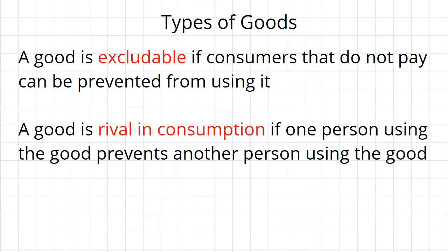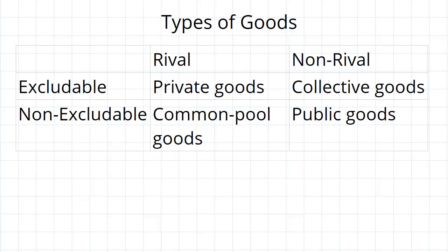These two attributes allow us to have four different types of good. The first type of good, which is excludable and rival in consumption, is private goods. Throughout these videos we've mostly been dealing with private goods — this is most goods that you'd be able to think of. Excludable means that you can only get them if you're willing to pay for them, and rival in consumption means that you can't sell one good to multiple people — you can only sell one to one person.